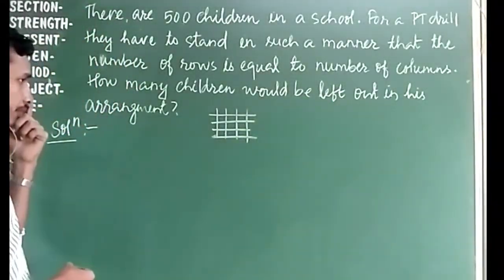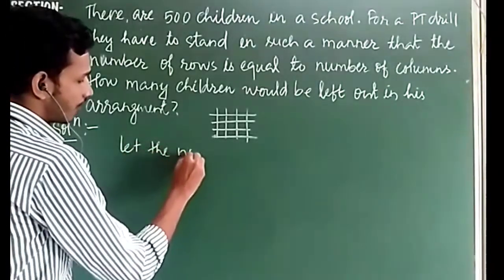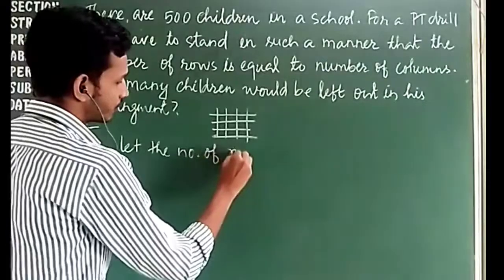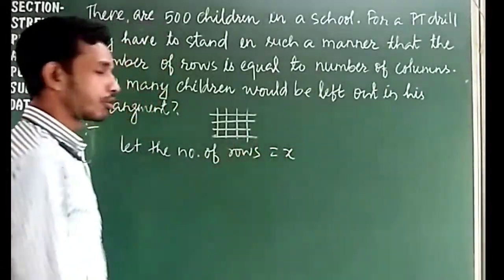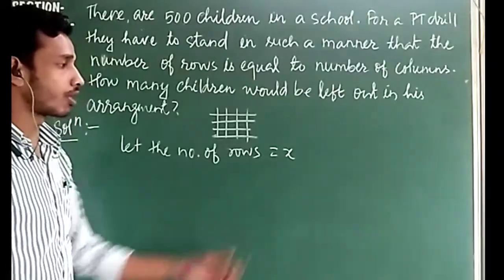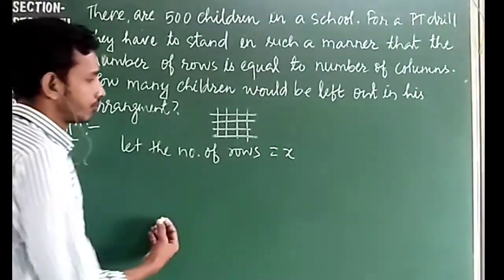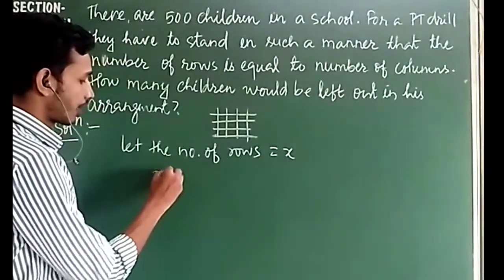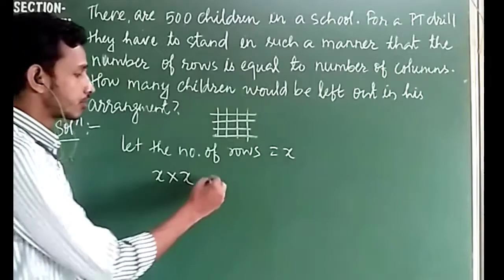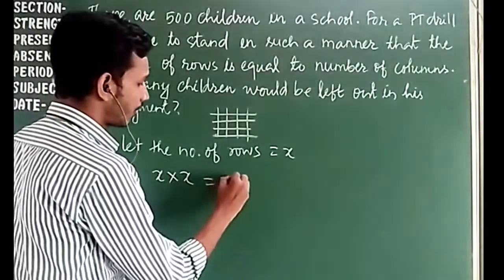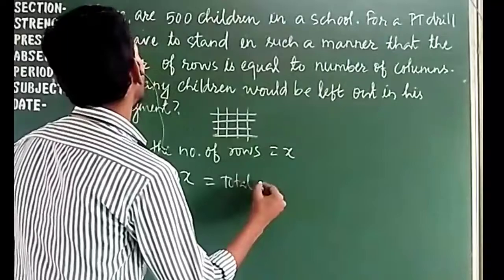We know 500 is not a perfect square, so there will obviously be some extra students. We let the number of rows equal x, which also equals the number of columns, so x × x equals the total children placed in the arrangement.